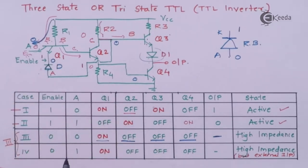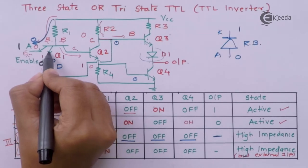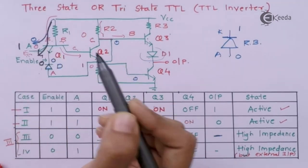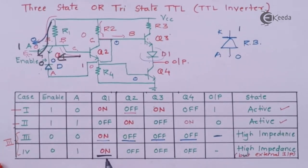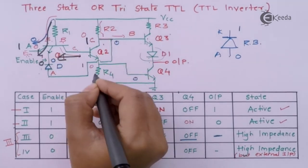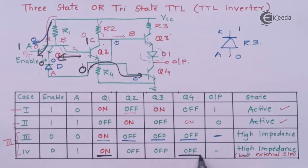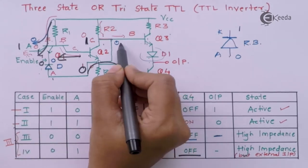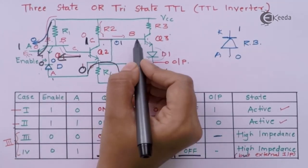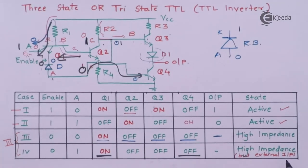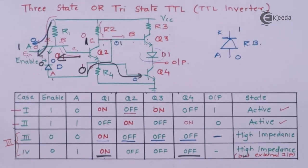Case 4: enable=0, A=1. Since enable=0, the multi-emitter remains at ground potential, current flows again making Q1 on, so Q2 remains off. Q2 being off means Q4 is off. Q3 should turn on based on the split phase output giving 1, but Q3 remains off due to the diode connected at the enable input directing current away. So Q3 cannot turn on without an external input. This is also called a high impedance state because an external input is needed to turn Q3 on.